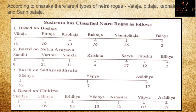Based on netra vayva (structural location): sandi gatha 9, vartma gatha 21, shukla gatha 11, krishna gatha 4, sarva gatha 17, drishti gatha 12, and bahya 2. Total: 76.